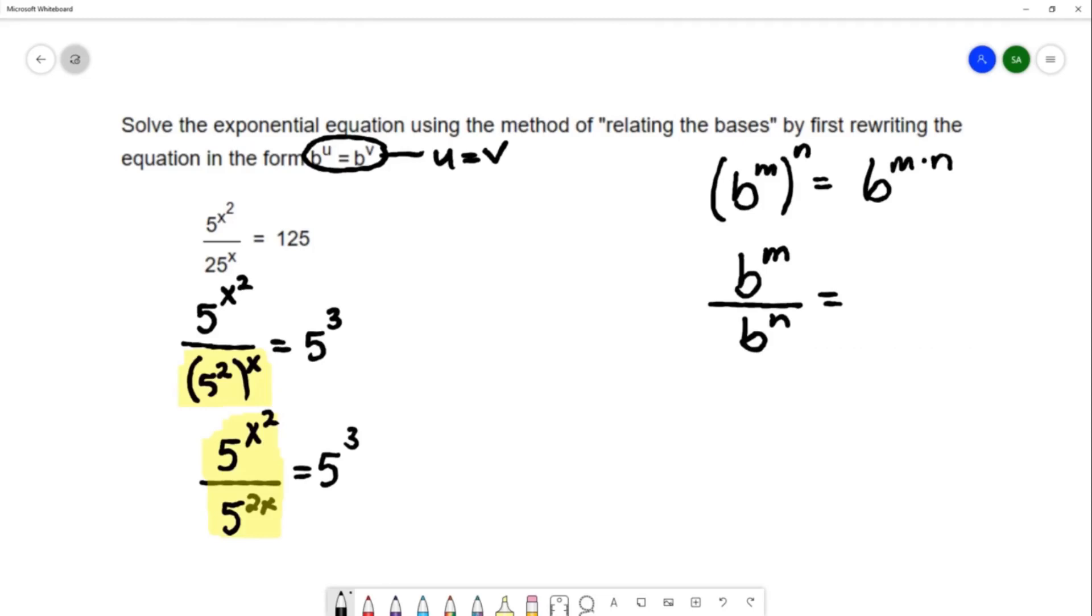When you have this situation, when you're dividing exponential expressions with the same base, you're going to simplify by subtracting the exponents. That's b to the m minus n.